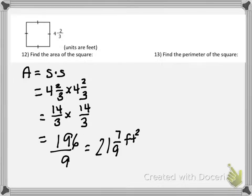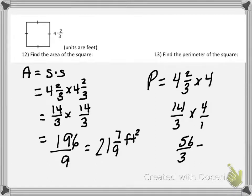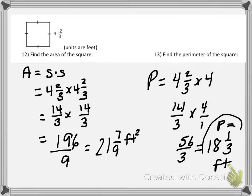For the perimeter, we can add up the 4 sides — 4 and 2 thirds four times — or multiply 4 and 2 thirds times 4. We said 4 and 2 thirds is the same as 14 thirds. Multiplying across: 14 times 4 is 56, and 56 over 3 is 18 and 2 thirds. So our perimeter is 18 and 2 thirds feet.